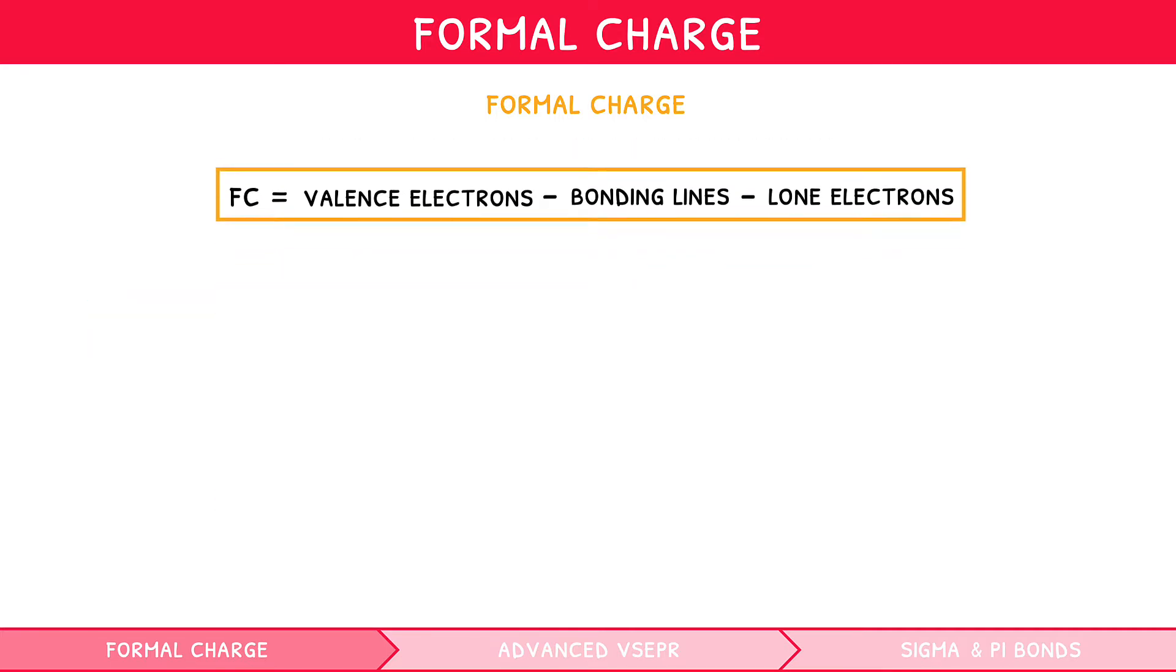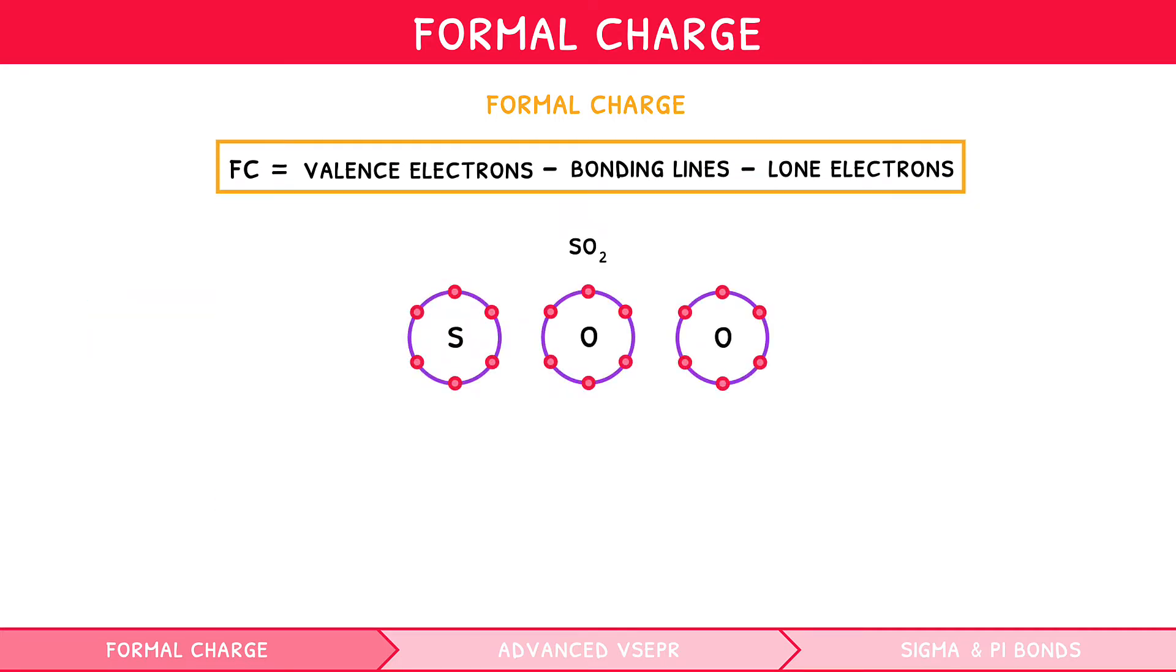Let's take a look at an example, SO2. Start by drawing the Lewis structure. There are 18 valence electrons, so 9 lines. Connecting each oxygen to the central sulfur using 1 line, then filling the outer oxygen's octet using 3 lines, leaves 1 line to be placed on the sulfur. Now we check to see if we can make any double bonds. We know that oxygen can make a double bond, so we move 1 line from 1 oxygen to the central sulfur, to fill sulfur's octet.